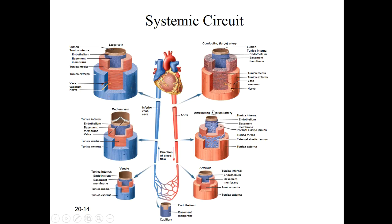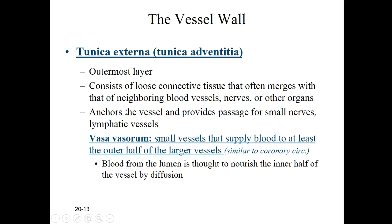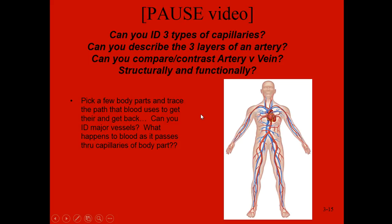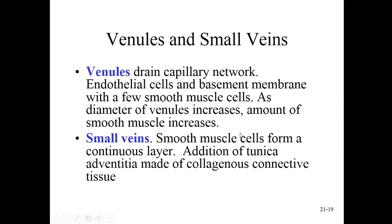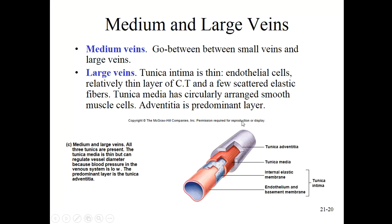Generally speaking, the lumen is larger in veins than arteries, and that helps keep blood pressure on the venous return trip much lower. Our veins are also much more superficial — ninety-nine percent of the time, nicks and scratches cut into venous blood which drips or oozes. Arteries tend to be much deeper because they carry much higher blood pressure, and an arterial bleed produces a spurting wound.